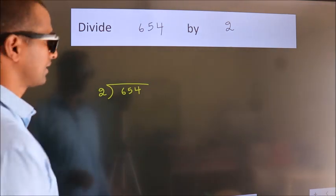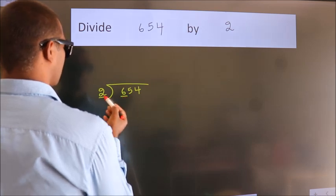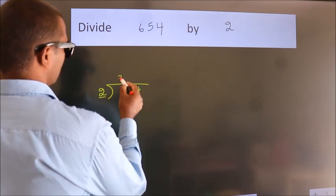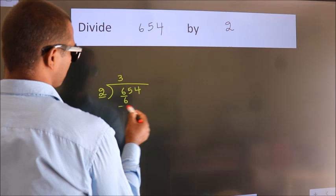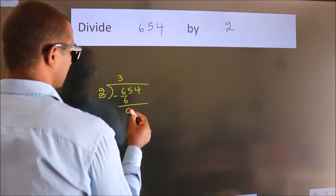Next, here we have 6. Here 2. When do we get 6? In the 2 table, 2 times 3 is 6. Now we should subtract. We get 0.